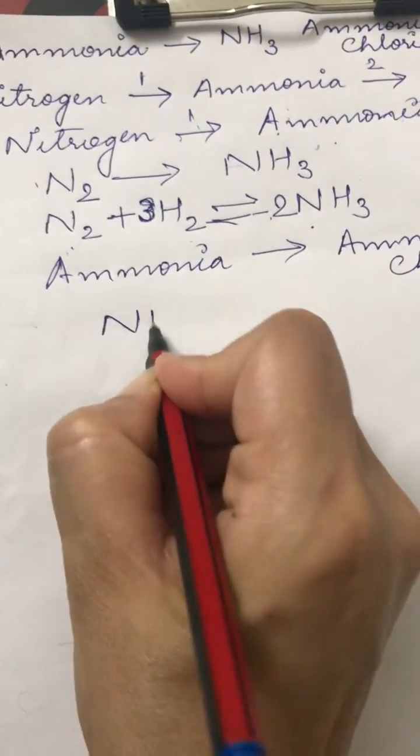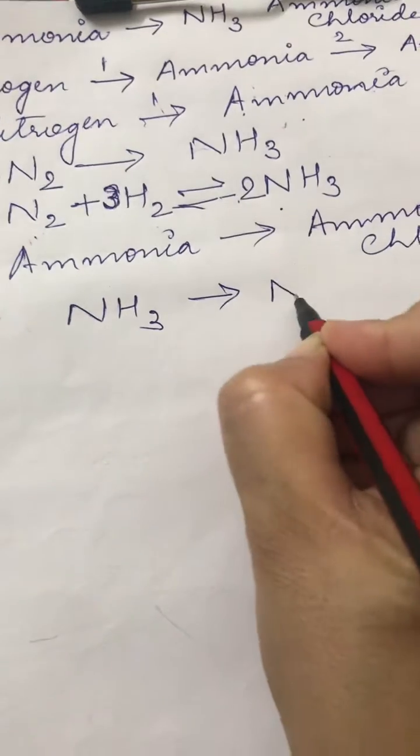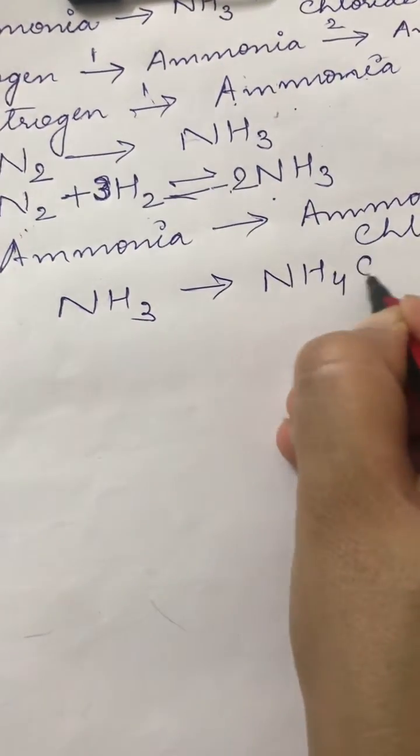We write it like this. So ammonia is NH3. We have to convert NH3 to NH4Cl.